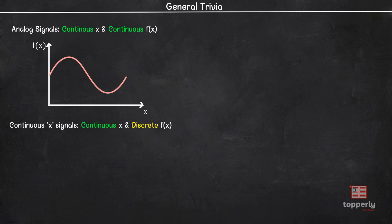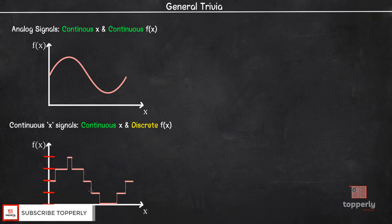Moving on, in the case of continuous x signals, the variable x is continuous and the function f is discrete. This graph shows a typical continuous x signal.